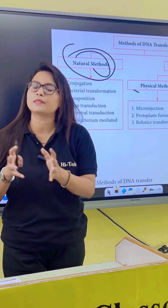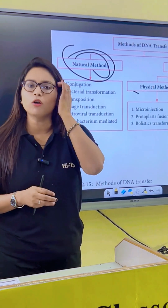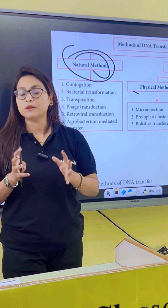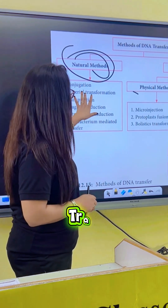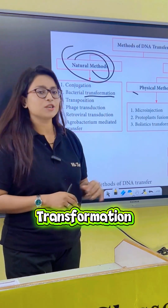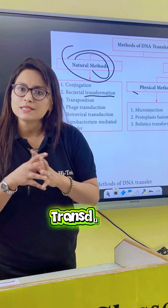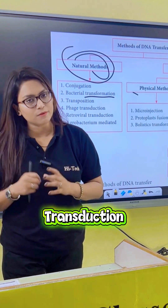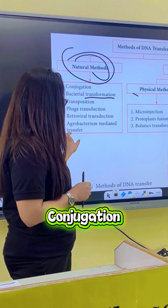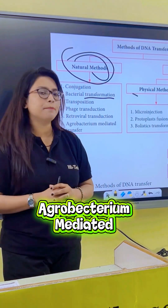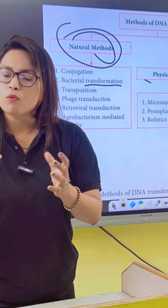What are the natural methods of gene transfer? They are of the following types. The first one is transformation, the second one is transduction, the third one is conjugation, and the fourth one is agrobacterium mediated gene transfer.